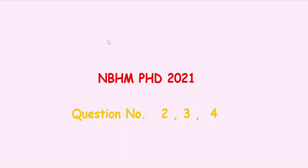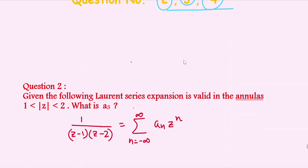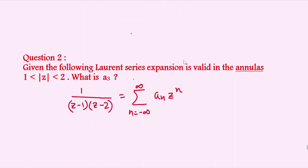Hello everyone, welcome to Math Systematips. In this video we are solving questions 2, 3, and 4 of NBHM PhD 2021. Question 2 is from complex analysis, question 3 is from linear algebra, and question 4 is from algebra or abstract algebra. Before starting, please like the video, comment if you have any doubt, and don't forget to subscribe the channel.